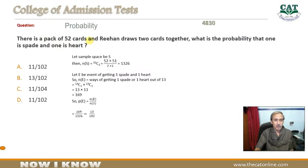There is a pack of 52 cards and Rihan draws two cards together. What is the probability that one is spade and one is heart?